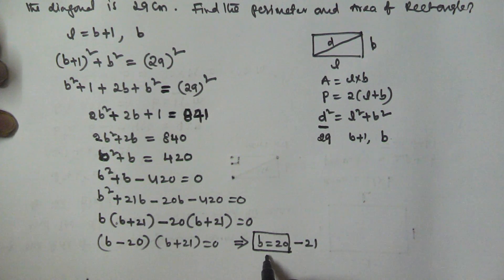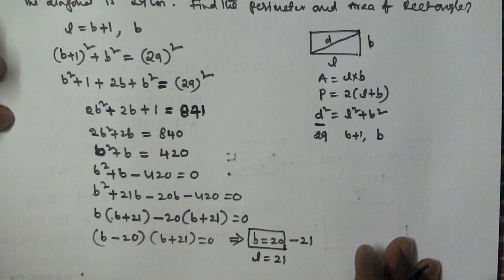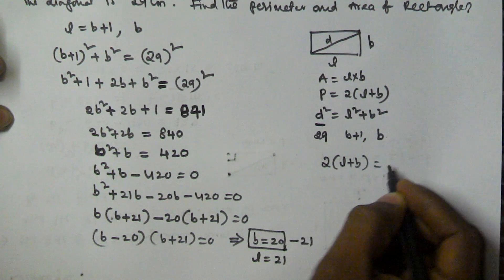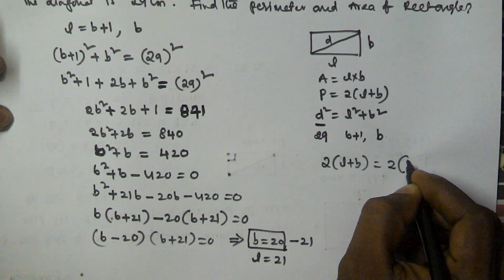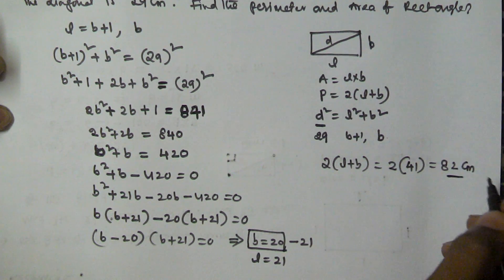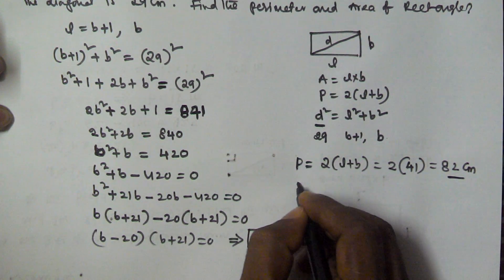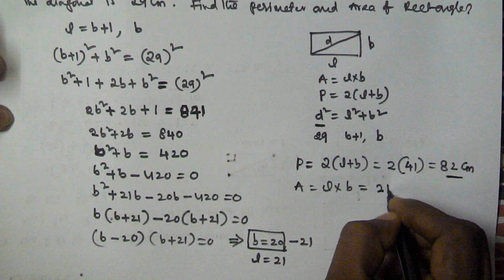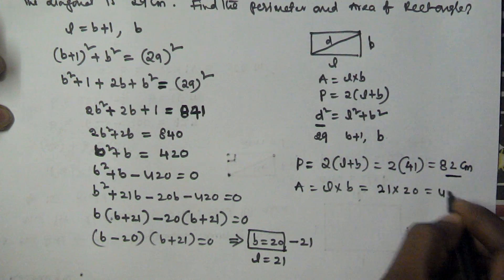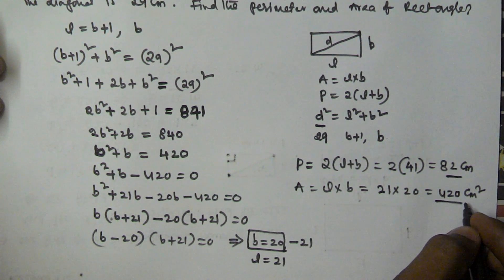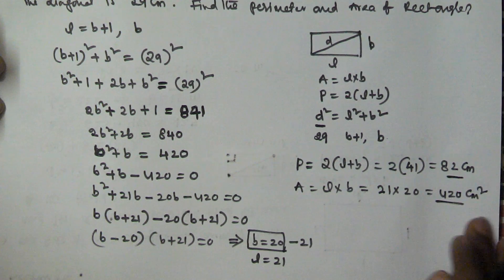If b = 20, then the length is b + 1, so l = 21. The perimeter is 2(l + b) = 2(21 + 20) = 2 × 41 = 82 centimeters. The area is l × b = 21 × 20 = 420 square centimeters. This is the area of the rectangle whose length is 1 more than its breadth.